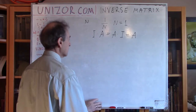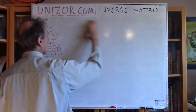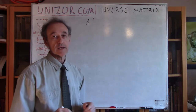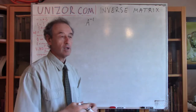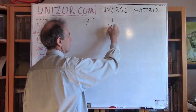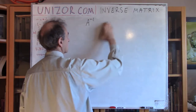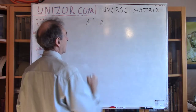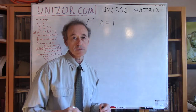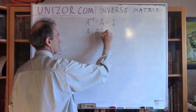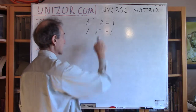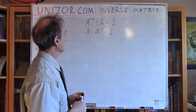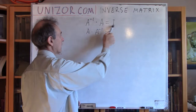Now the question is: can we define an inverse of matrix A? Usually it's written as A to the power of minus 1, which is analogous to numerical symbolics — though it's not really a power, just a symbolic representation. This is an inverse matrix, and we would like it to have the property that if multiplied by the original matrix, it gives the identity matrix — and this should hold on both sides.